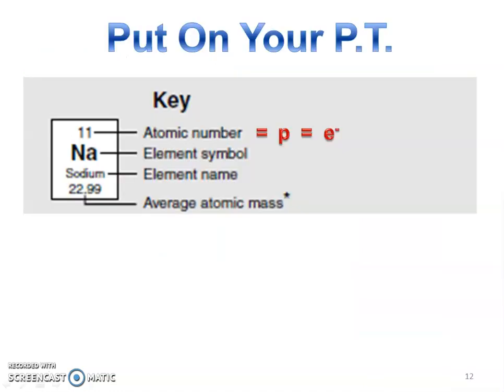When an atom gains or loses electrons, it becomes an ion — a charged positive or charged negative ion. So the electrons do change. That periodic table of yours is a cheat sheet. Locate your key, find the atomic number, and give yourself a note: atomic number equals protons equals electrons.